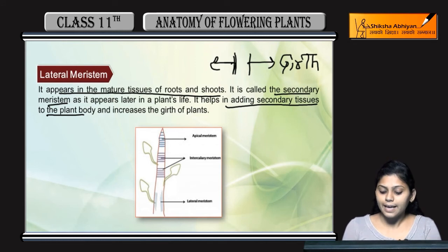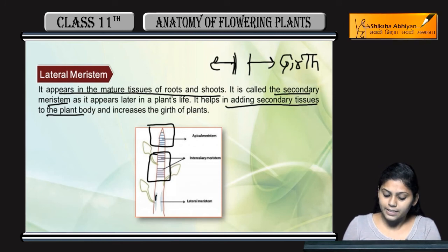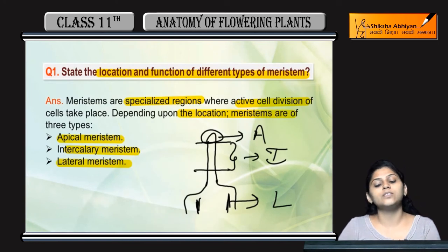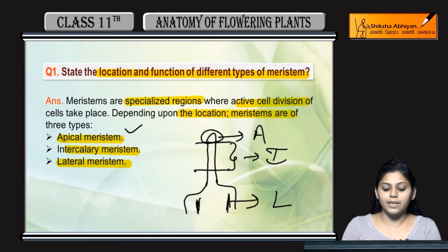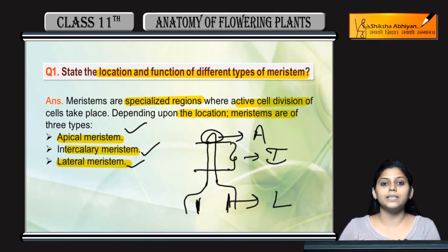You can see here — apical meristem is present at the apex, and intercalary meristem joh hai, woh in between mature tissues present hai, and lateral meristem are present here. So, on the basis of different locations, meristems are divided into three main parts: apical meristem, intercalary meristem, and lateral meristem. Apical meristem root and shoot elongation kerta hai. Intercalary meristem mature tissues ke bich mein present hoti hai. And lateral meristem lateral side mein present hoke girth ko increase kerta hai.